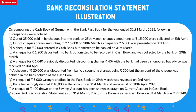Number 1: out of Rs. 35,000 paid in by cheque into bank on 25th, cheques amounting to Rs. 15,000 were collected on 5th April. Out of cheques drawn amounting to Rs. 15,600 on 28th March, a cheque for Rs. 5,000 was presented on 3rd April. Number C: a cheque for Rs. 2,000 entered in cash book but omitted to be banked on 31st March. Number D: a cheque for Rs. 1,200 deposited in bank but omitted to be recorded in cash book, and was collected by the bank on 29th March.